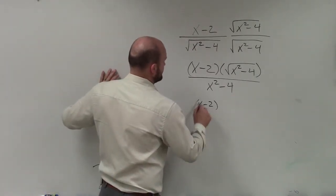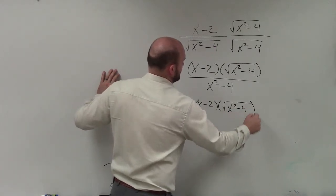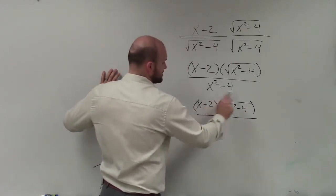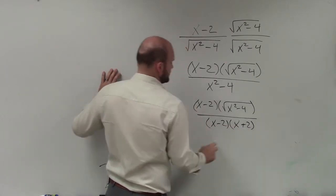So that'd be x minus 2 times the square root of x squared minus 4 over this, but using the formula difference of two squares can be written as x minus 2, x plus 2.